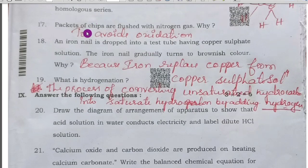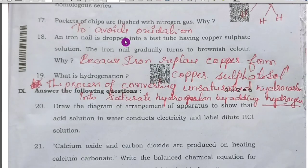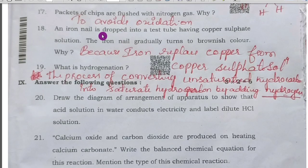Next, 17th question: packets of chips are flushed with nitrogen gas because to avoid the oxidation. 18th question: an iron nail is dropped into a test tube having copper sulfate solution. The iron nail gradually turns to brownish color.